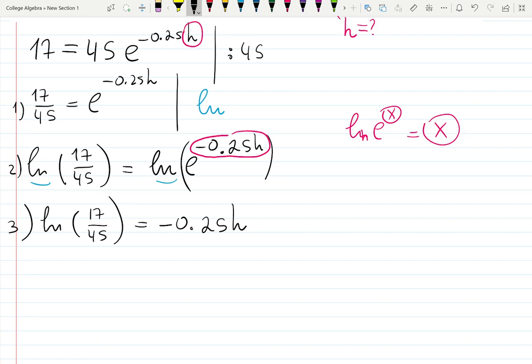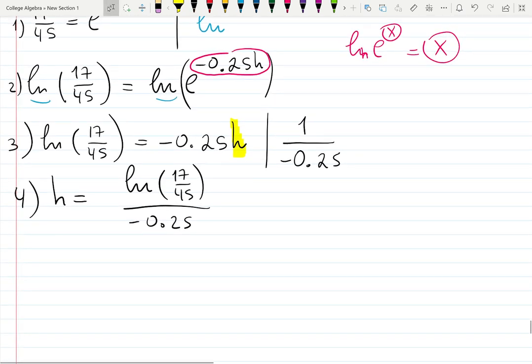Simplify using properties or even definition of log in this case. And now we just need to isolate h to solve for h. I will divide everything which is, I will divide by everything which is not h. That is negative 0.25. So the last step will be h equals left-hand side as natural log of 17 over 45, all over negative 0.25 that came from the right-hand side. This is the final answer.